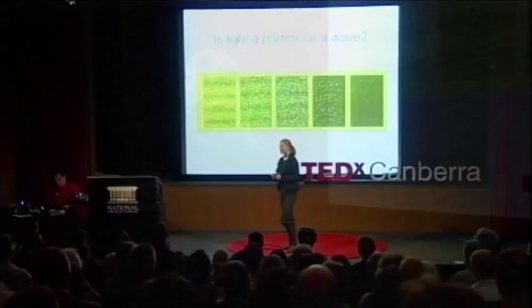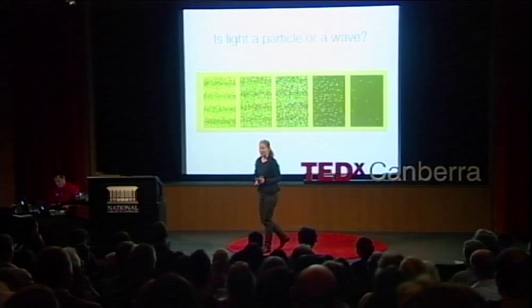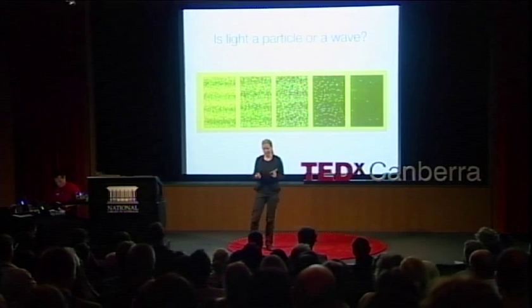But before I do that, I want to tell you a story about how we learned about light. It's the 1600s and Isaac Newton gets very excited about the idea of light as a particle. There was a competing theory — a guy called Huygens thought that light was a wave. But Huygens was not the rather tetchy and very famous president of the Royal Society. So for the next hundred years, we agreed with Newton and we knew that light was made of particles.